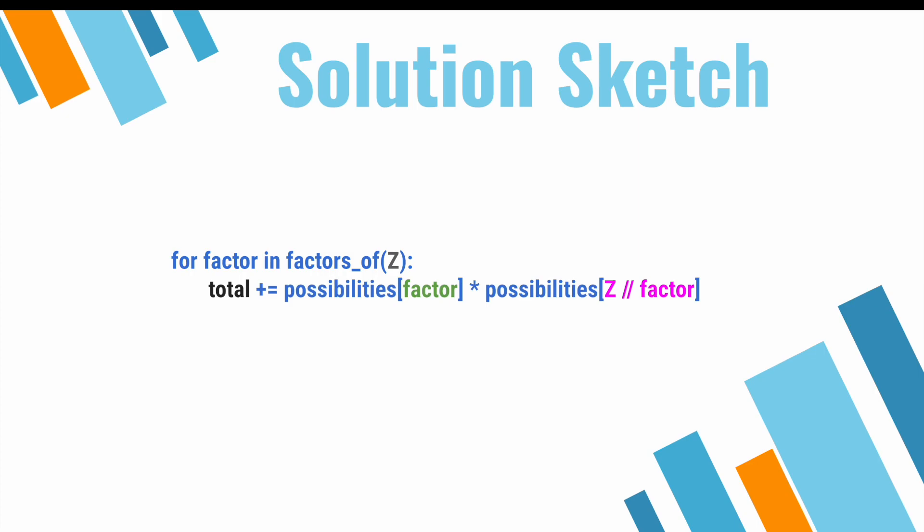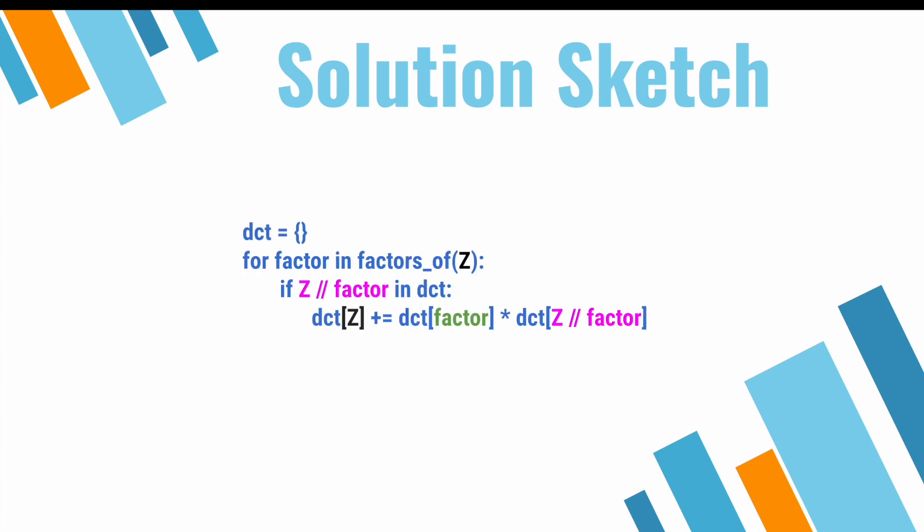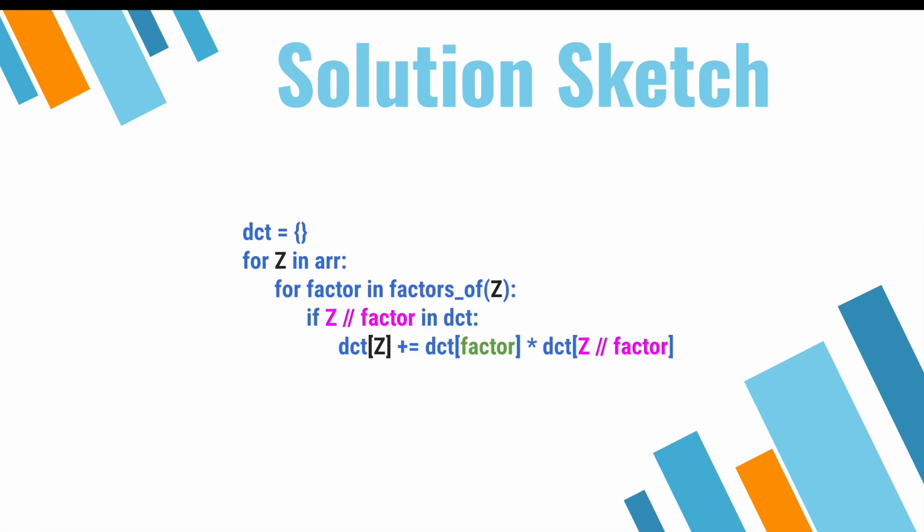But now let's expand our scope a little bit. z might not be at the top of the tree, in which case we might want to continue building on what we have so far. So instead of storing our accounts in total, let's store these numbers in a dictionary, where the keys represent the roots of each subtree, and the values represent the number of possible trees you can generate using that value as the root. That way we can reuse our result for this node as we move through the tree. Let's also perform this operation for all possible values by iterating through our array.